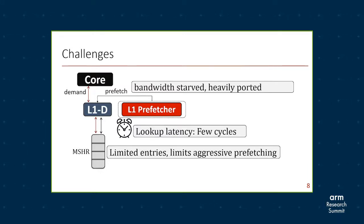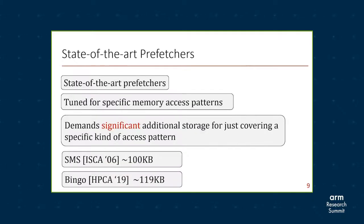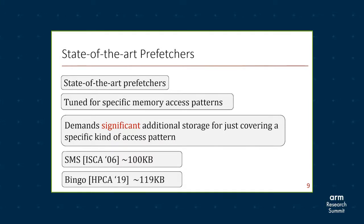The number of MSHR entries at L1D is limited compared to L2, which limits the degree of a prefetcher — meaning the aggressiveness of prefetching. It can't prefetch beyond the limit because the MSHR entries will create a bottleneck. State-of-the-art prefetchers are actually tuned for specific memory access patterns, and because of that they demand significant additional storage — for example, prefetchers like SMS and Bingo demand more than 100 KB of hardware overhead to improve prefetch coverage.